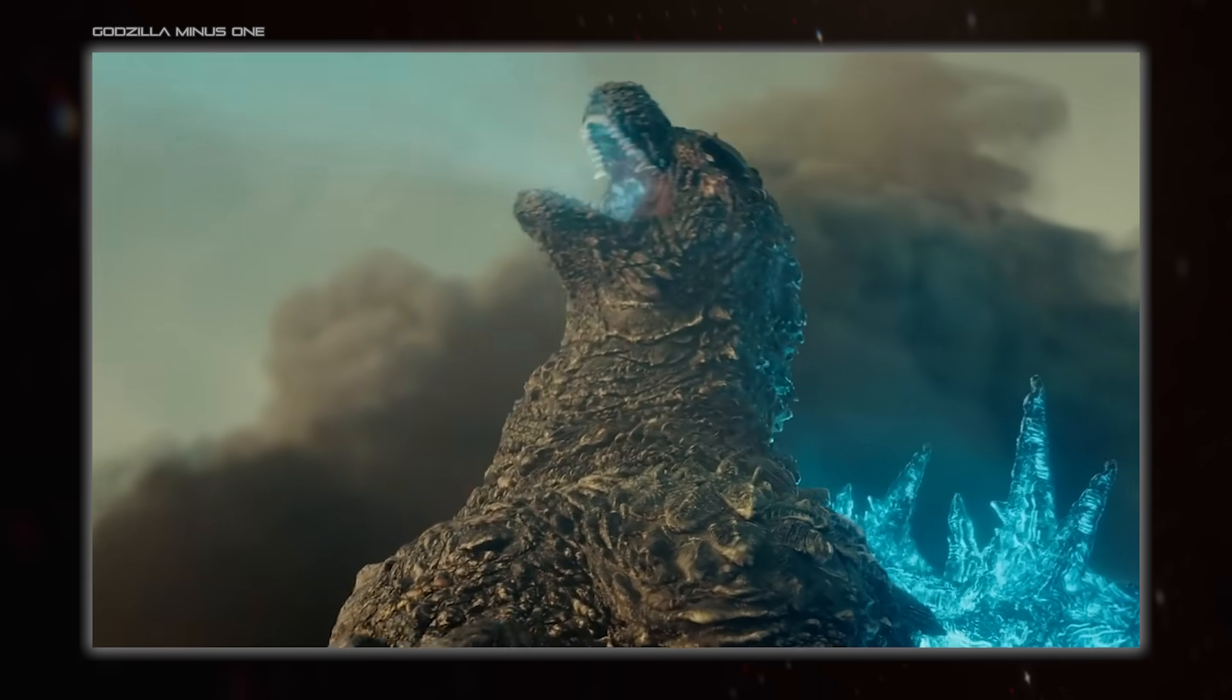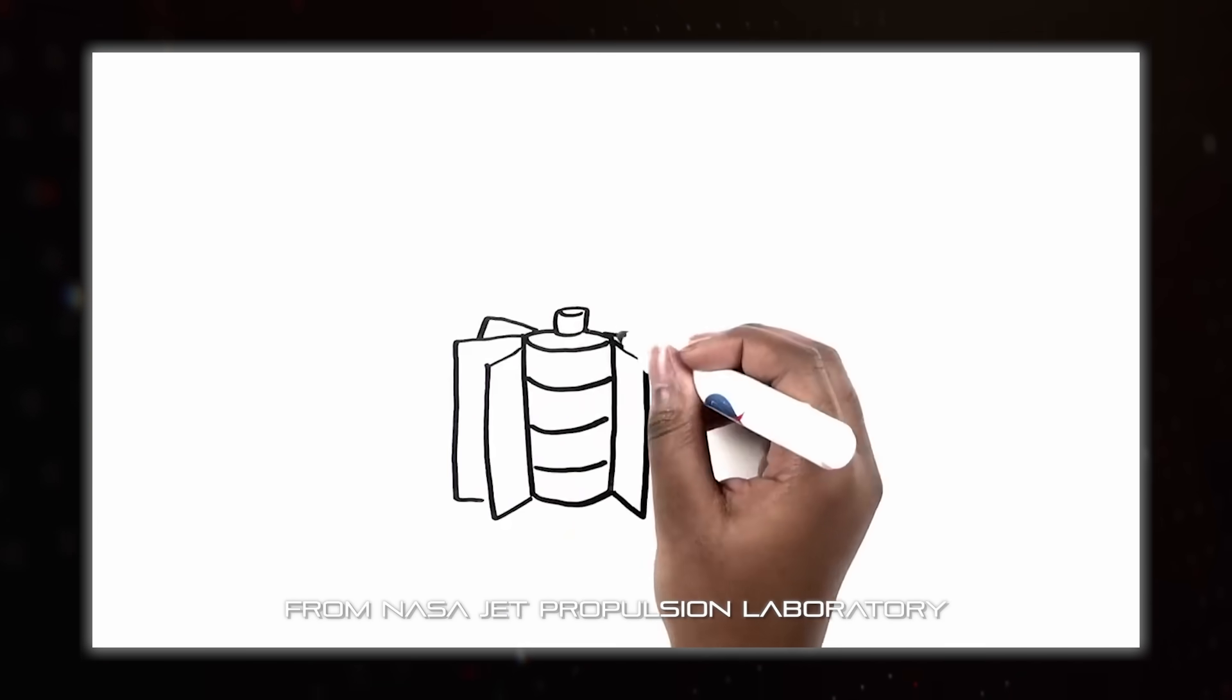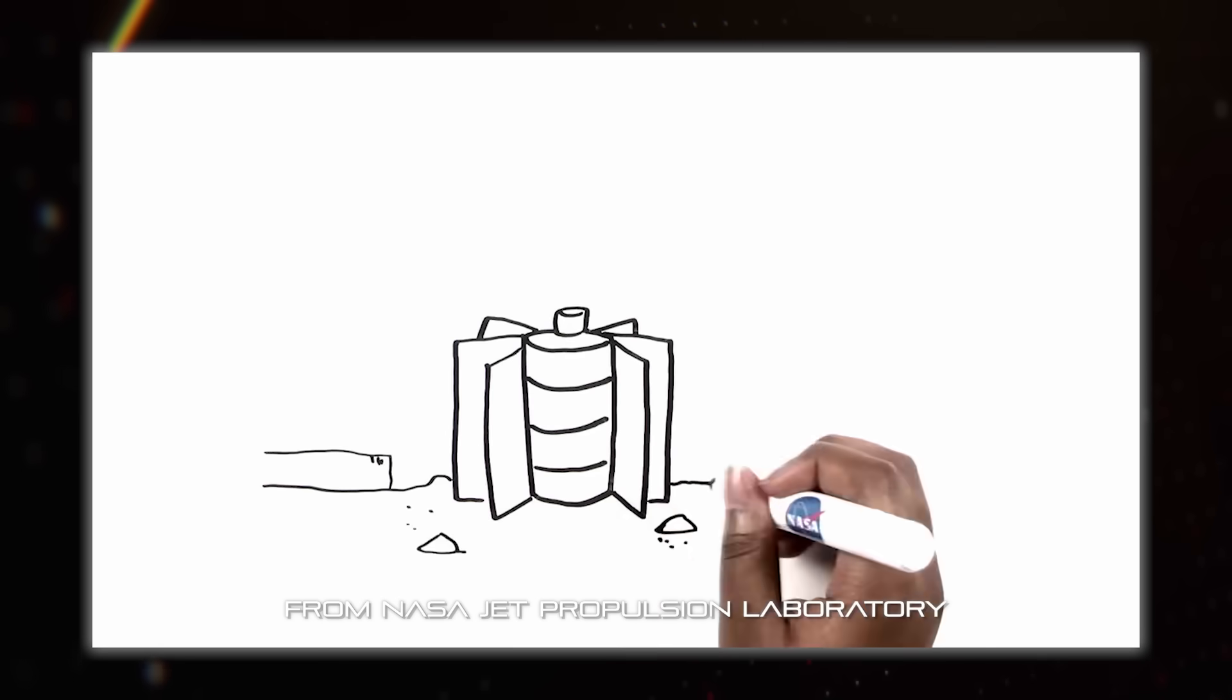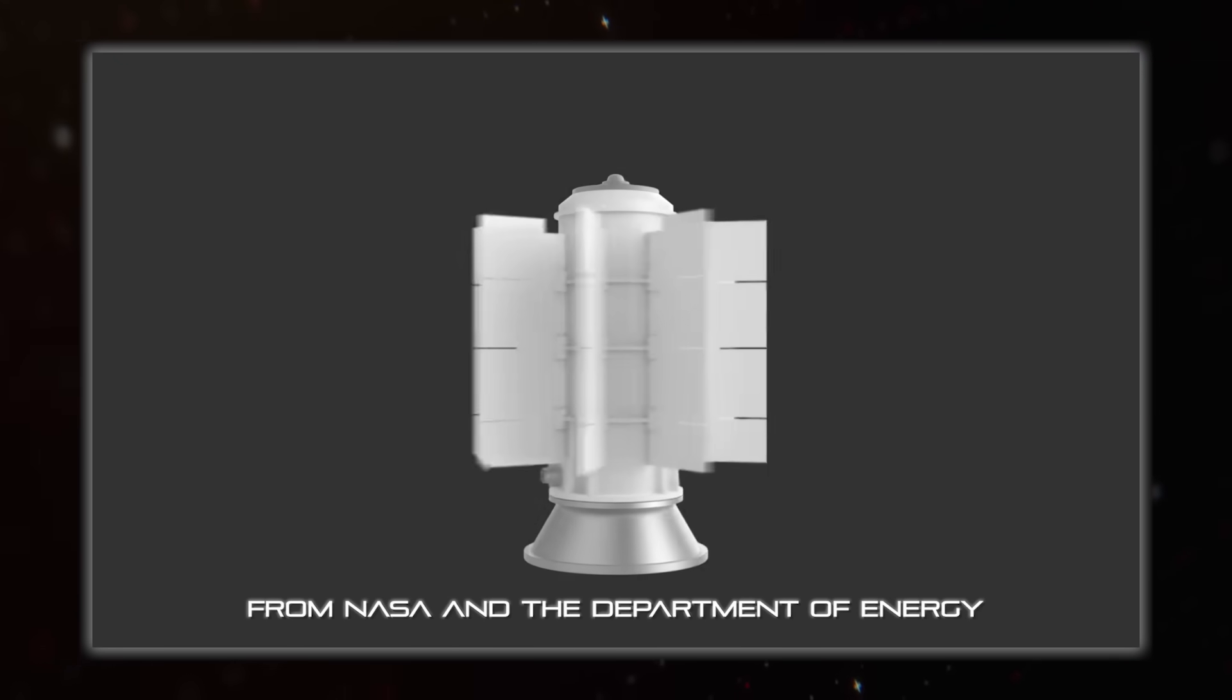Next up is nuclear power, which ultimately comes down to being a dense, long-lasting heat source. The smallest and simplest nuclear power source is the radioisotope thermoelectric generator, or RTG. As their nuclear fuel undergoes radioactive decay, it produces heat.